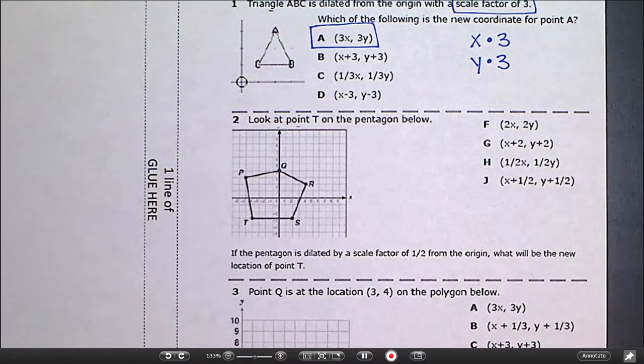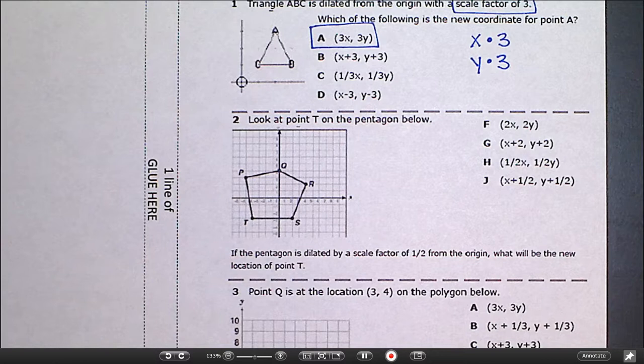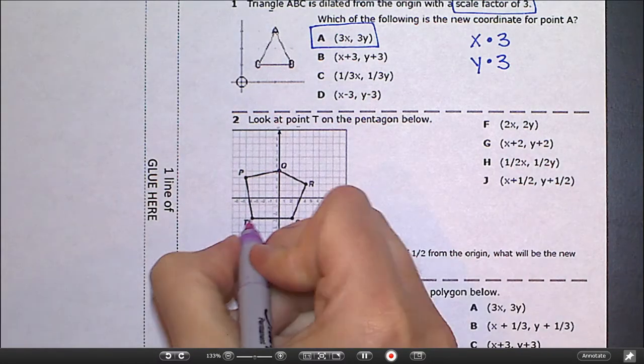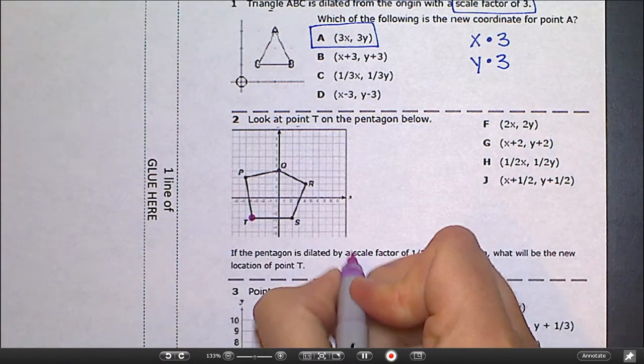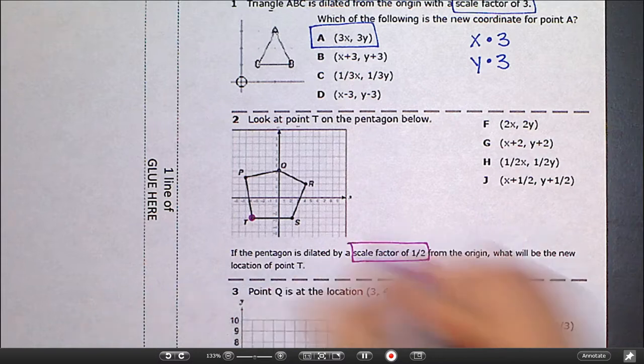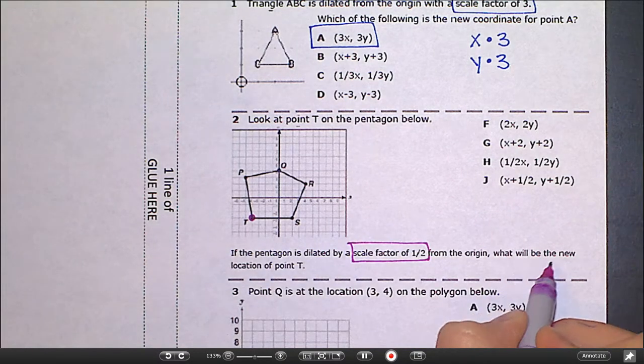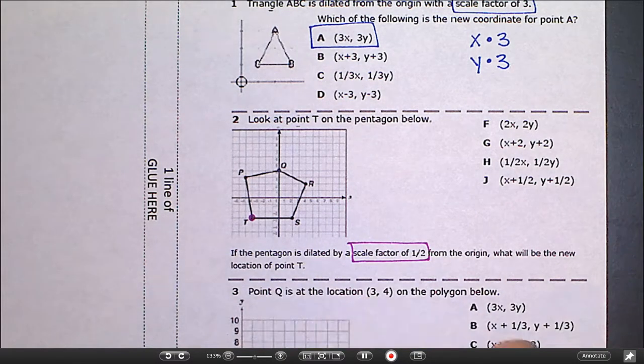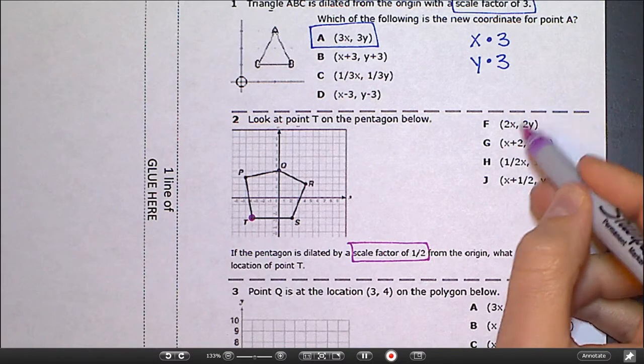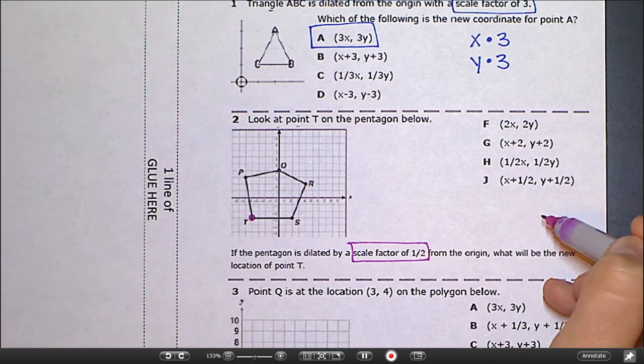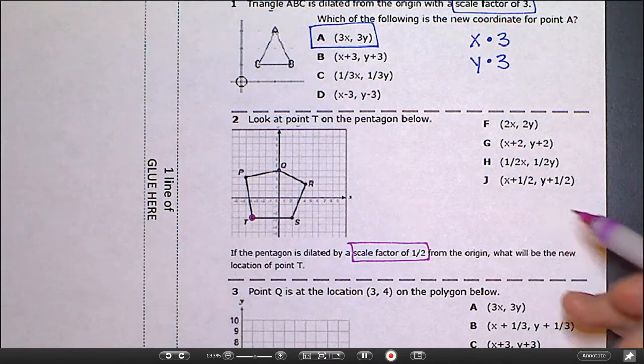Let's look at number 2 just for clarification. It says look at point T on the pentagon below. So we're looking at point T right here. If the pentagon is dilated by a scale factor of 1/2 from the origin, what will be the new location of point T? And again, this is algebraic representation, so it's not asking for the actual coordinates, although we could find the actual coordinates. It's just asking us what happened.